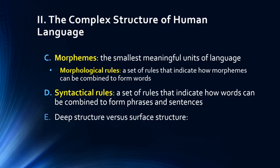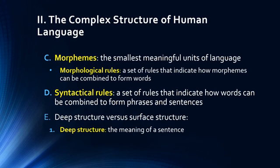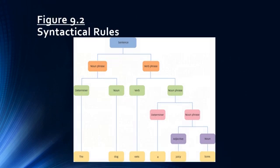We also talk about deep structure versus surface structure of language. Deep structure is the meaning of a sentence — what meaning we are trying to convey. Whereas surface structure is simply how a sentence is worded; its phonemes and morphemes are combined together to create the surface structure, which conveys the deep structure, which is the meaning. In terms of syntactical rules, we have noun phrases and verb phrases, determiners, nouns, verbs, which all combine with adjectives and so on.